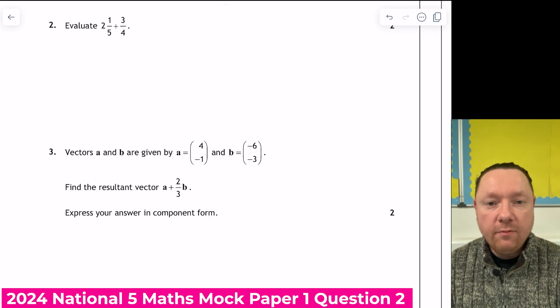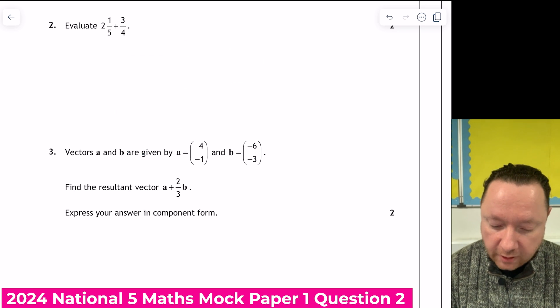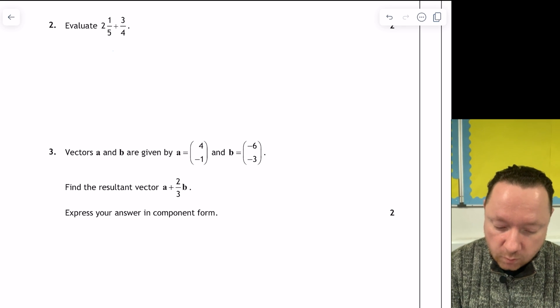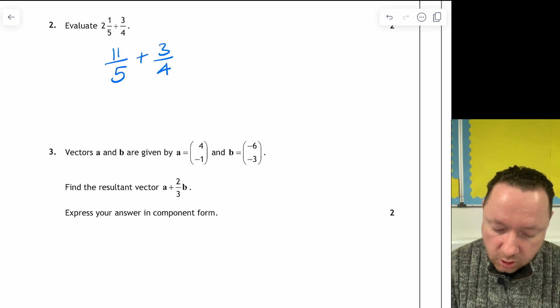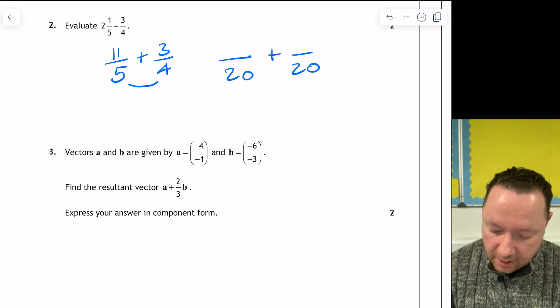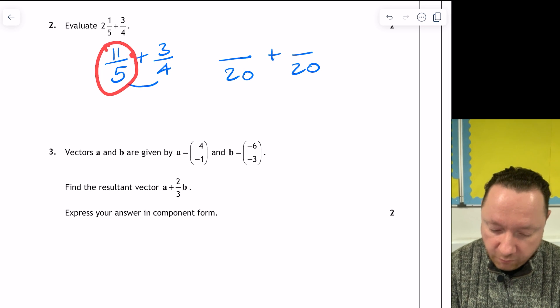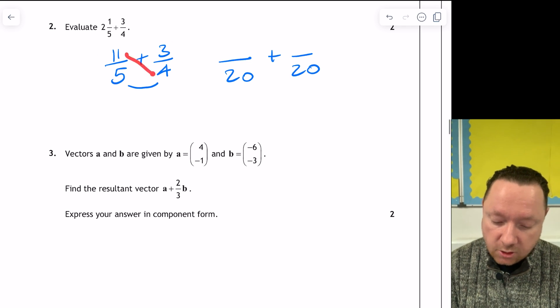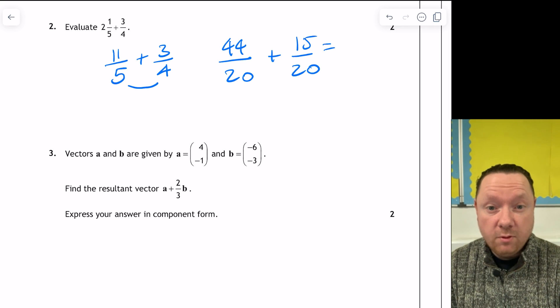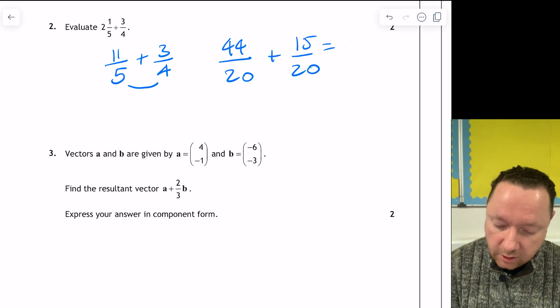Question 2 for the National 5 2024 Mock Exam Paper 1. 2 and a fifth plus 3 quarters. Lots of ways to do this, but most people turn it all into fractions. So you do 2 times 5 is 10, plus 1 is 11 fifths, plus the 3 quarters, and now I need a common denominator. So I can just times these together to get 20. So it's 2 fractions with 20 and a plus in between. This has been timesed by 4, and this has been timesed by 5. So 11 times 4 is 44, and 3 times 5 is 15. 44 plus 15 is 59.